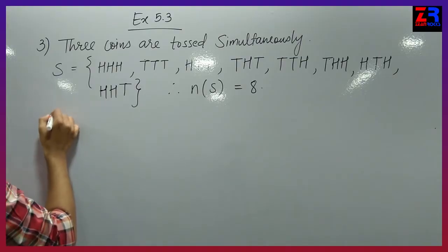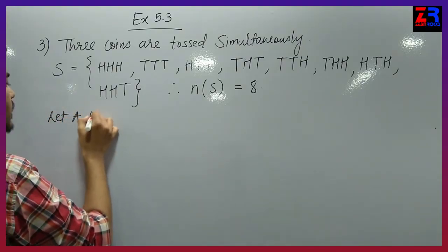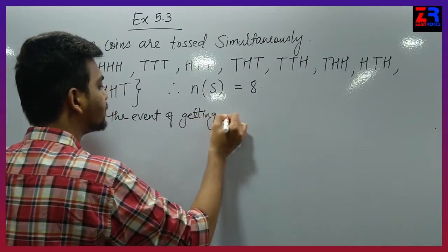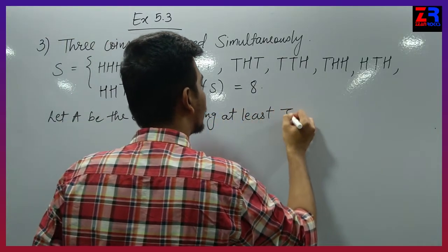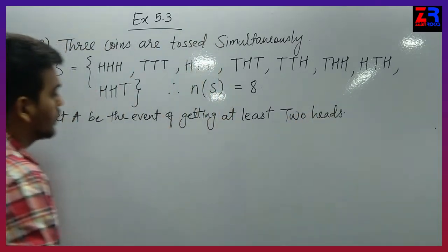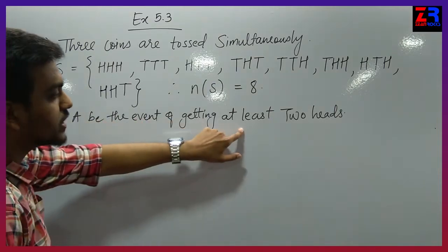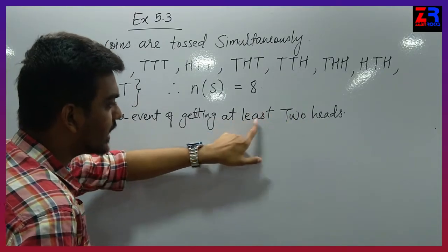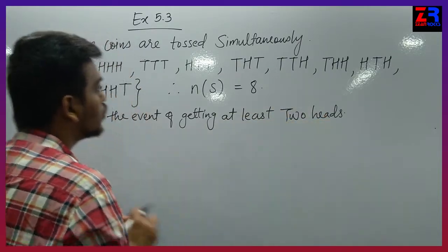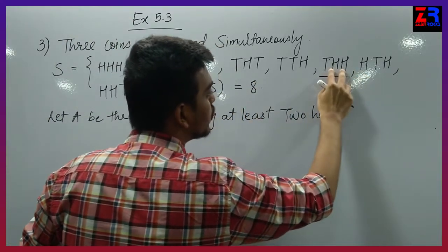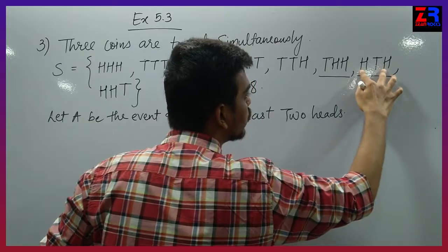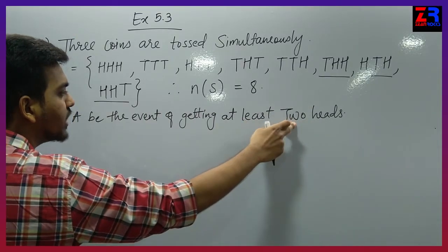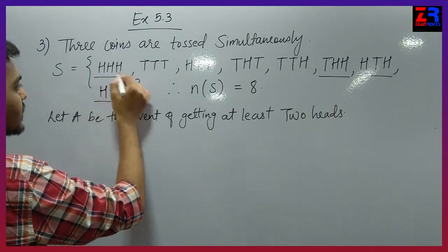Therefore N of S equals to 8. Now the first condition: let A be the event of getting at least two heads. At least two heads — 'at least' means two or more than two heads. For example, this one has two heads, this one has two heads, and this one also has two heads. At least means two or more than two, so more than two means if there are three heads, then also the condition is satisfied.